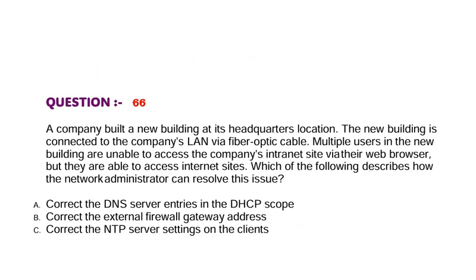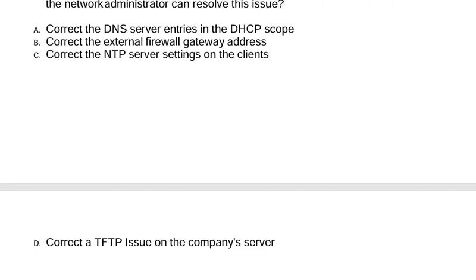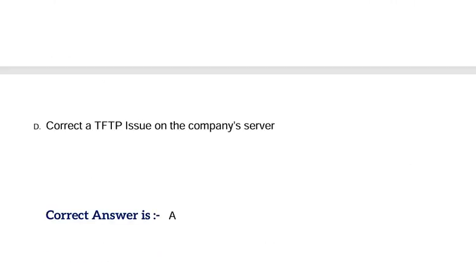Question: A company built a new building at its headquarters location. The new building is connected to the company's LAN via fiber optic cable. Multiple users in the new building are unable to access the company's intranet site via their web browser, but they are able to access internet sites. Which of the following describes how the network administrator can resolve this issue? Option A, Correct the DNS server entries in the DHCP scope. Option B, Correct the external firewall gateway address. Option C, Correct the NTP server settings on the clients. Option D, Correct TFTP issues on the company's server. Correct answer is Option A.